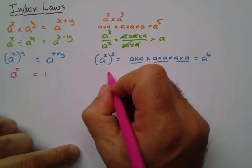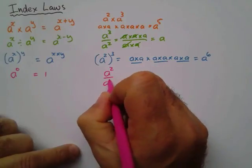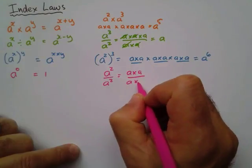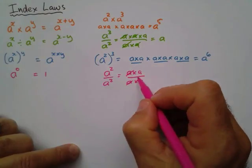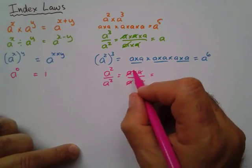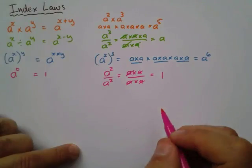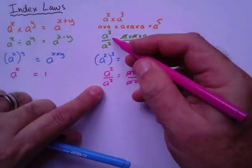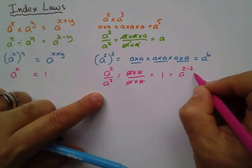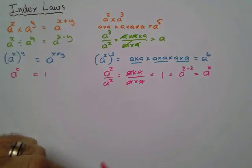The proof of that is if I have a to the power 2, divide by a to the power 2, it's the same as a times a, divide by a times a. The a's cancel, so my answer is 1. Which means if I apply my second law, that equals a of 2 minus 2, which gives us a to the power 0, and a to the power 0 is therefore 1.